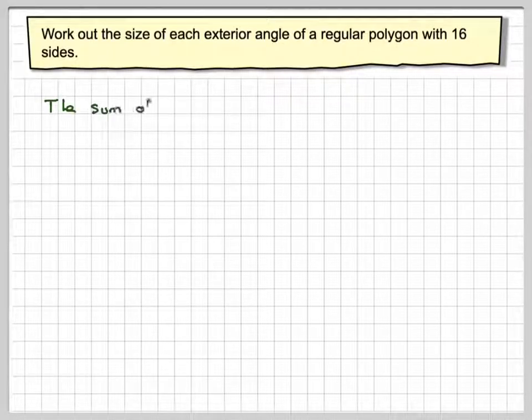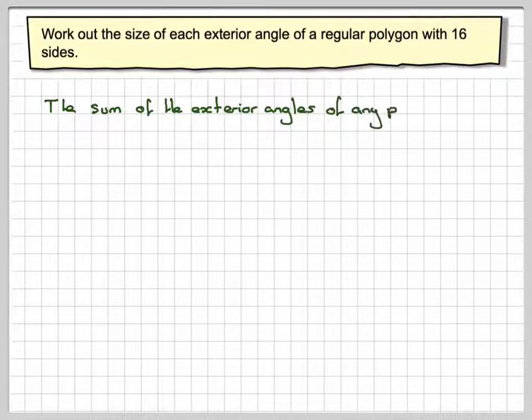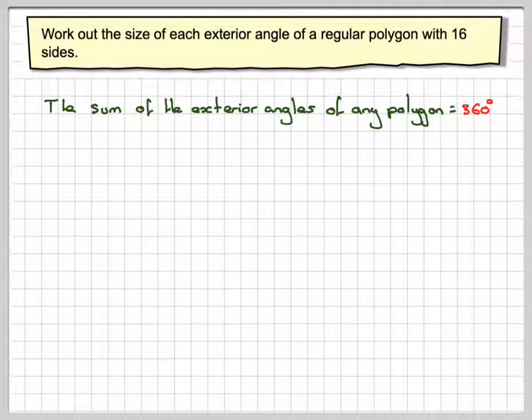Well, it doesn't matter what the size of the polygon is, how many sides the polygon might have. The sum of the exterior angles of any polygon, regular or irregular, is going to be 360 because basically you go round a circle.